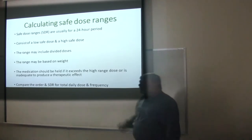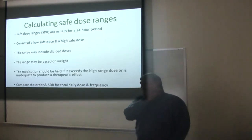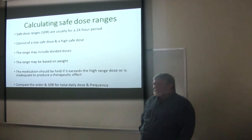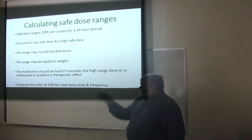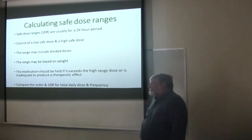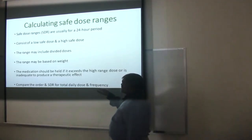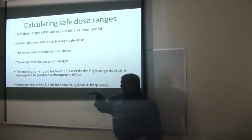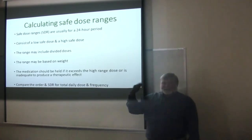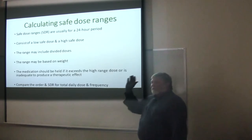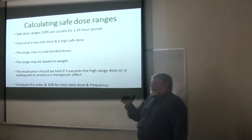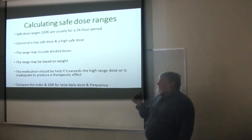What's a safe dose range? We were talking about therapeutic index last week. On the low side you're talking about the minimum dose that will have a therapeutic effect, and on the high side is the maximum dose you give without causing damage. Usually it's over 24 hours — you add up all the doses, figure out their body weight, and however that drug is calculated.